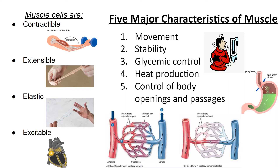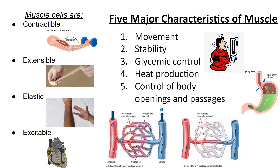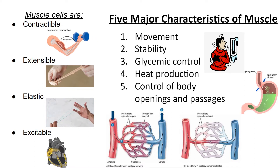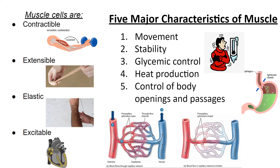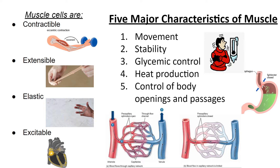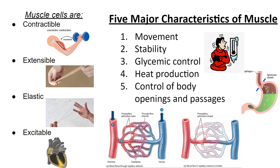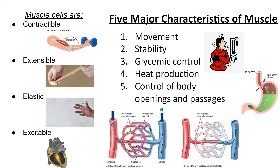The movement and stability functions of muscle are pretty straightforward, but let's look at the last three. Glycemic control is regulation of our blood glucose levels. Muscle helps regulate this by serving as a site to burn off excess glucose in the blood. Muscle cell contraction requires an immense amount of ATP, so mitochondria in the muscle cells work overtime, and muscle cells can be stimulated to burn energy when it's in excess.